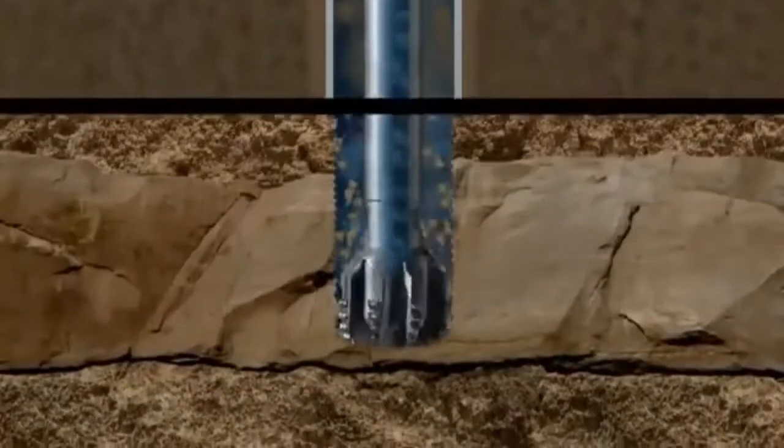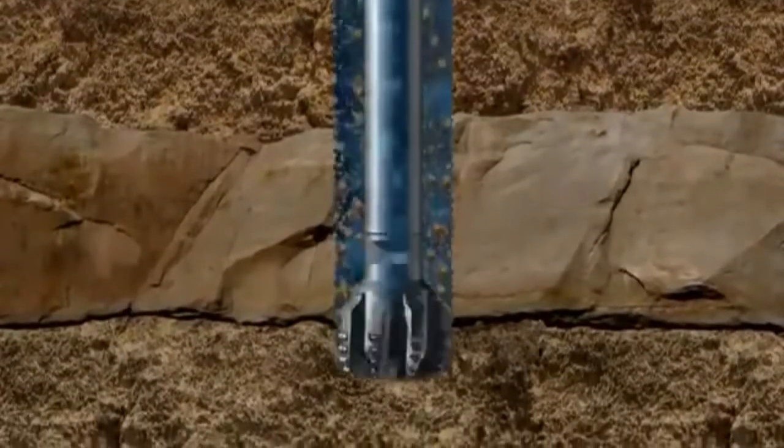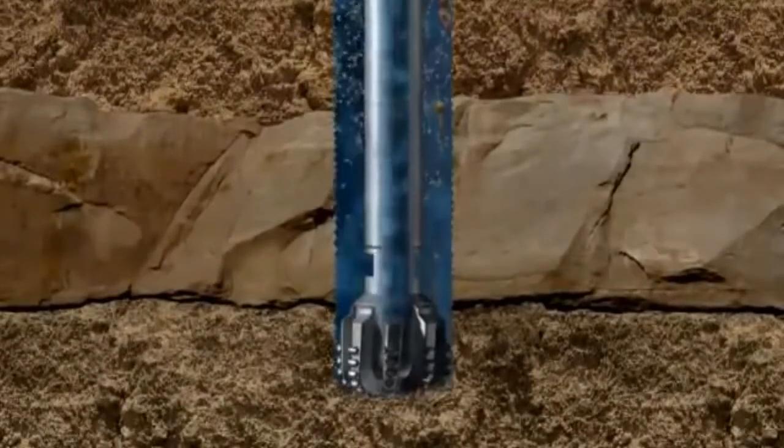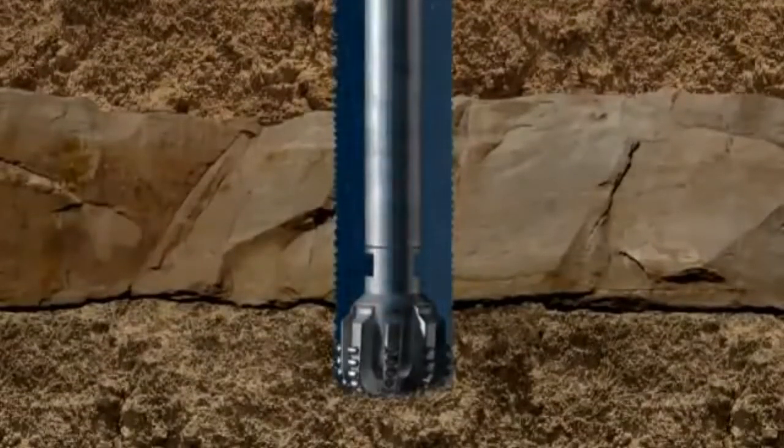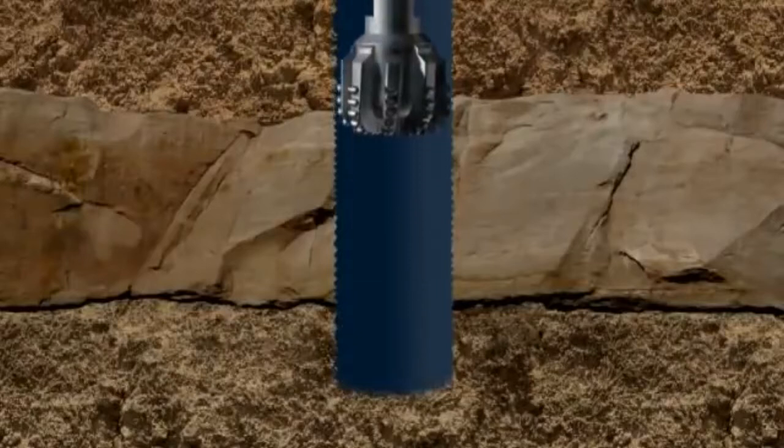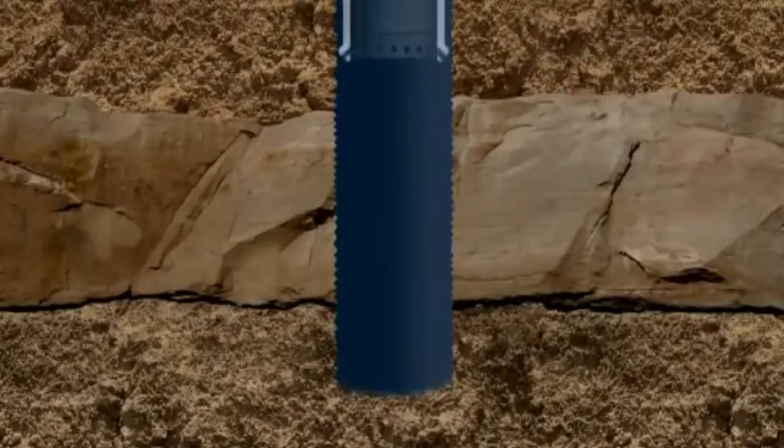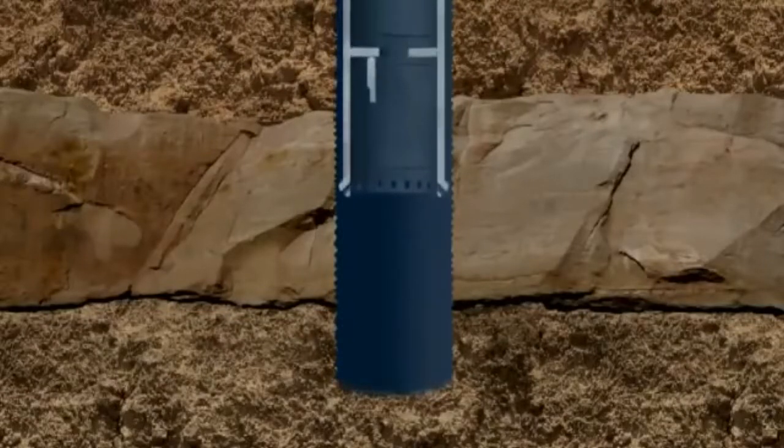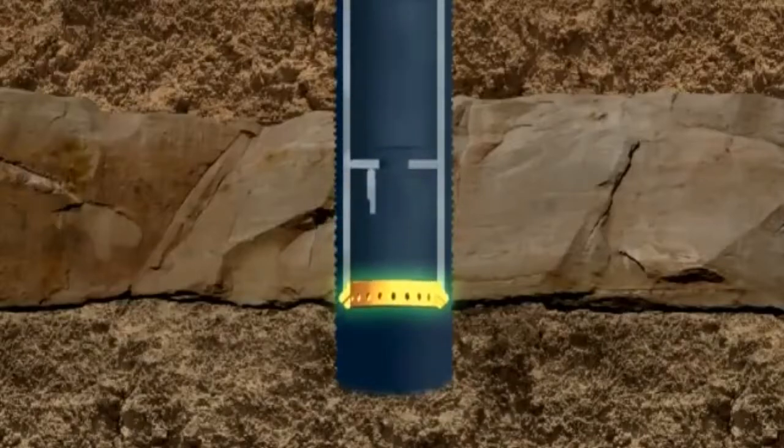The cuttings are just washed to the top of the well by seawater pumped through the bit. A second run of conductor is now lowered into the hole. At the bottom of the conductor is a guide shoe that stops the conductor snagging on the wellbore.